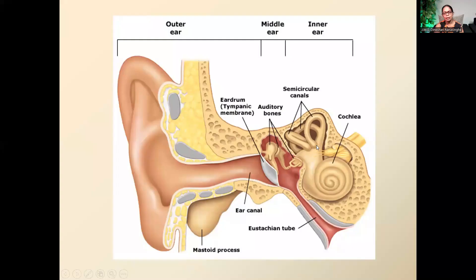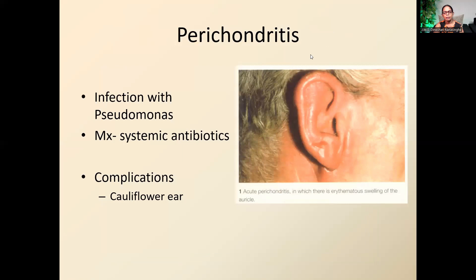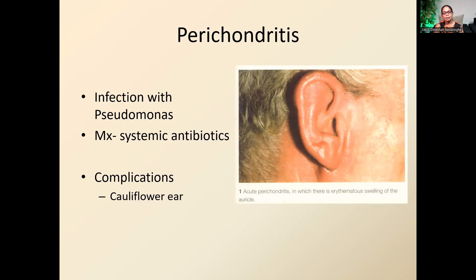We'll begin with perichondritis — infection involving the skin and perichondrium of the cartilage lining of the pinna. Usually caused by Pseudomonas, you get all features of acute inflammation: redness, swelling, pain, and warmth. You need to treat this with antibiotics depending on severity; systemic antibiotics are required for severe cases. If untreated, the patient will end up with a cauliflower ear because inflammation of the perichondrium compromises blood supply to the cartilage, leading to avascular necrosis.